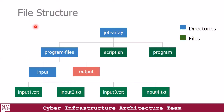Let's explain the file structure of the program we're going to be working with. The root directory is the job array directory — the parent directory that contains all the files. The program file is a batch program that processes the input files. We have the script.sh which contains the Slurm batch script. The program files folder contains the input and the output directory. The input directory contains the text data to be processed by the batch script, and the output is going to contain the result of the processed data.